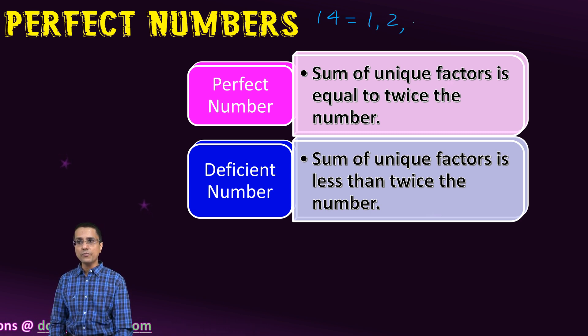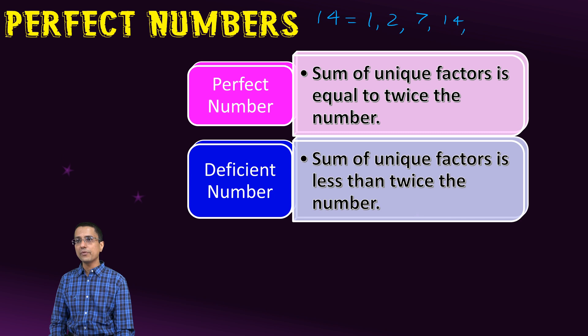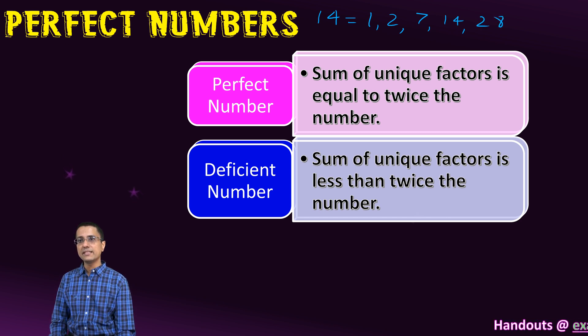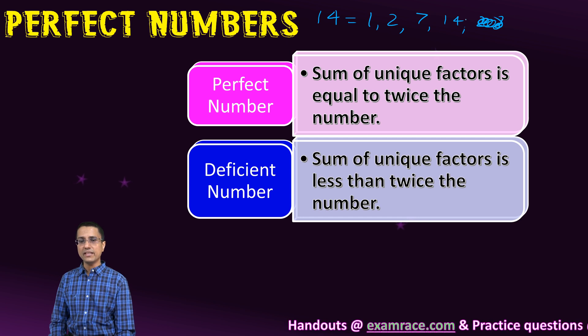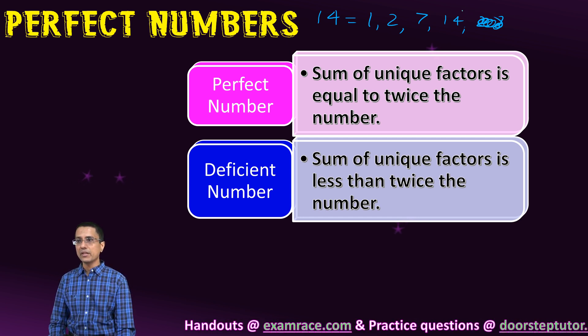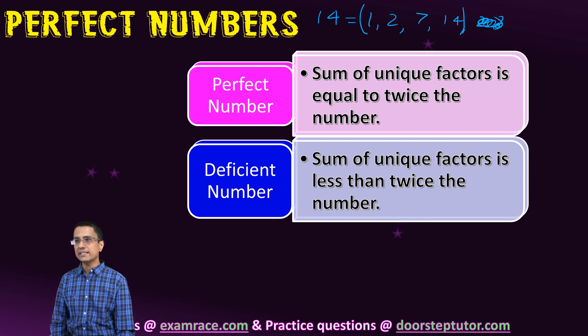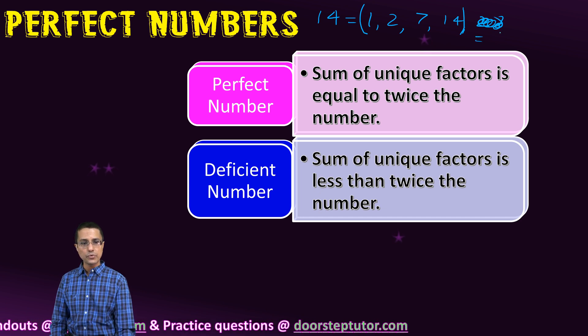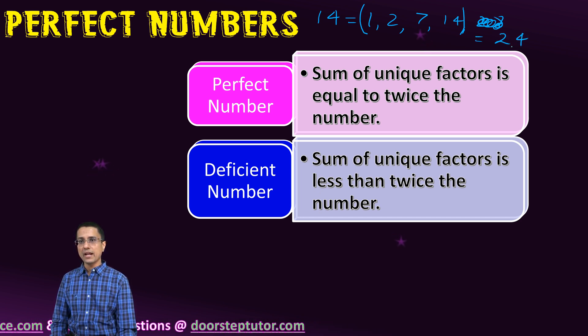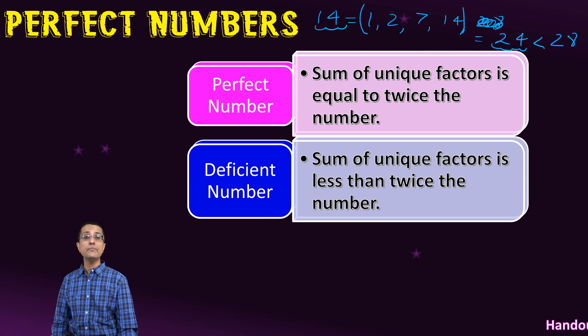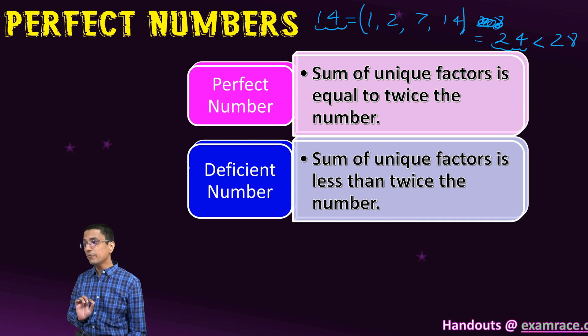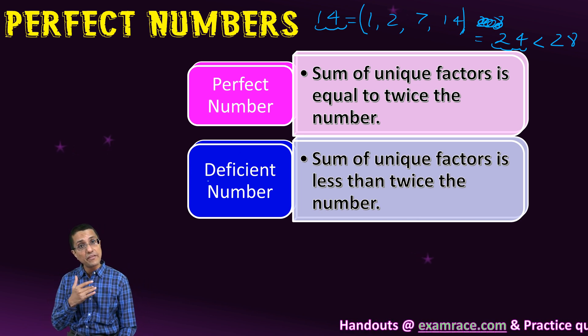I'm listing down all the factors of 14: 1, 2, 7, and 14 itself. If I total this, it comes out to 24, and this total 24 is less than 2 times 14, which is 28. Therefore, 14 is a deficient number. So 28 was a perfect number, 14 is a deficient number.